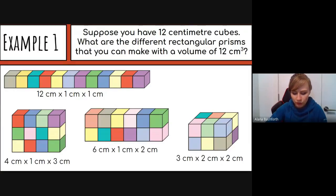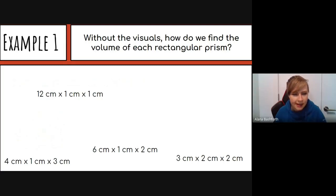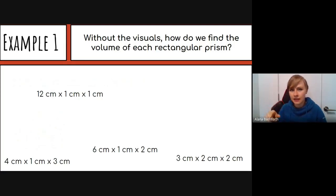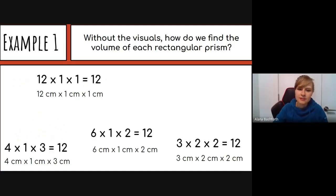When doing this, you only need 12 cubes and you can reconfigure them — you don't need all four built at the same time. As an added example: if you're given the dimensions and have to find the volume, just multiply the dimensions together. Multiply the first two numbers, then multiply that answer by the third. For example, 3 times 2 is 6, and 6 times 2 is 12. Likewise, 6 times 1 is 6 times 2 is 12, and 4 times 1 is 4 times 3 is 12 — all answers equal 12.